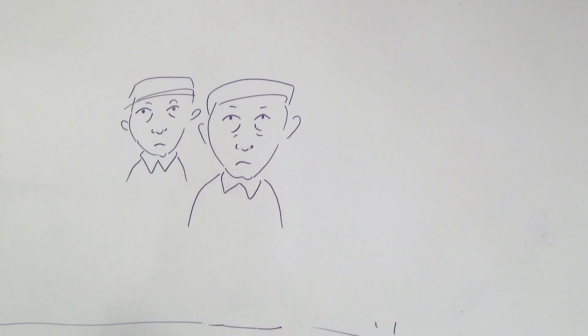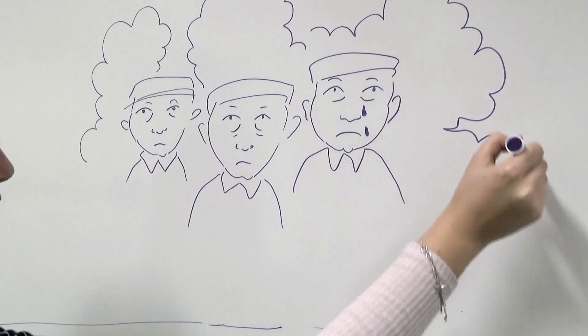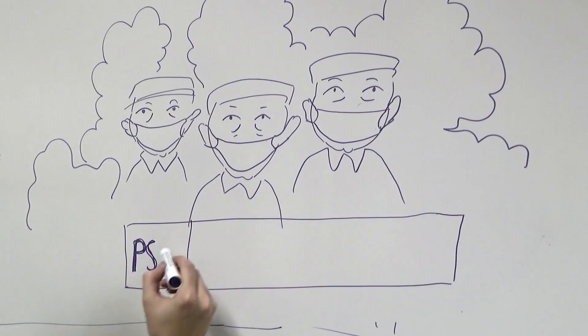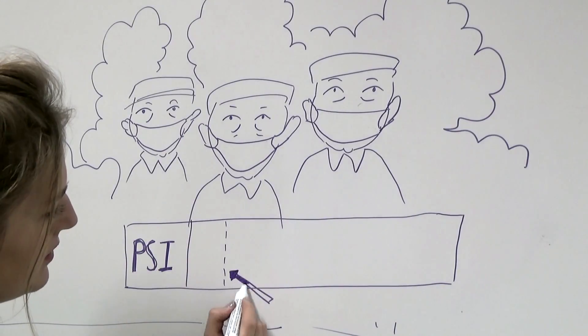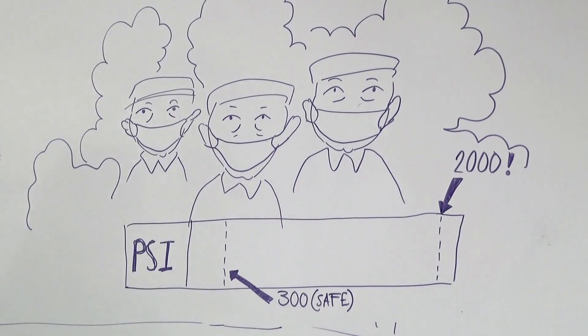According to the Pollution Standard Index or PSI, pollution levels in the air become hazardous to health at 300. In September 2015, Indonesian PSI levels nearly reached 2000, the knock-on effect being felt globally and notably in Singapore. Despite these dire notions, there are solutions to these important issues.